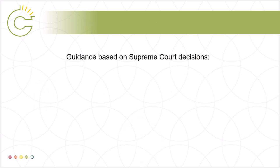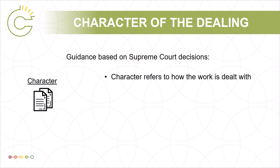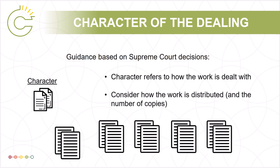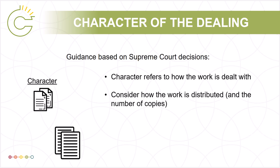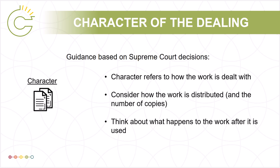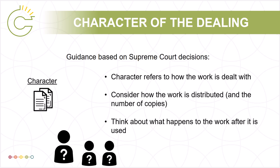The character of the dealing factor examines how works were dealt with. If multiple copies are made and widely distributed, this will tend toward unfairness. If a work is destroyed after it is used, this may tend toward fairness. Custom or practice in a particular trade or industry is also considered. It is important to identify who the user is when looking at all factors. For example, in the Alberta case, while teachers may have been making copies for their class, it is the student's perspective as the ultimate user that must be considered, and such copying should be seen as an individual copy for each student.